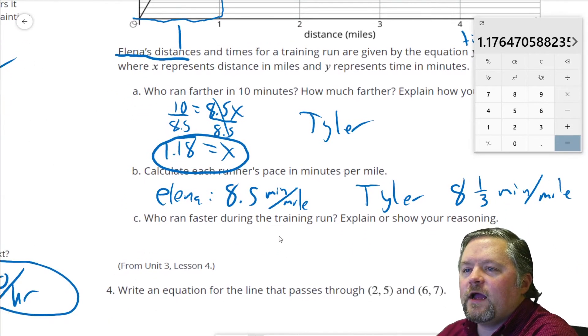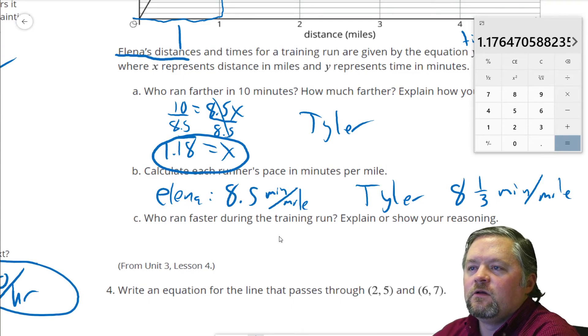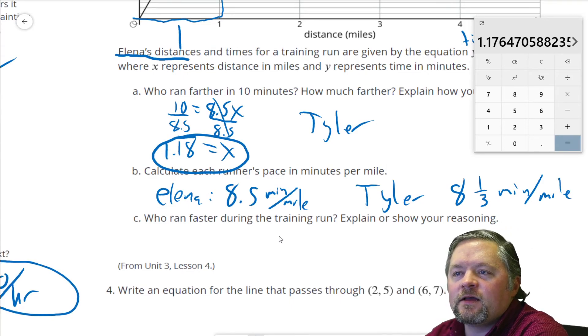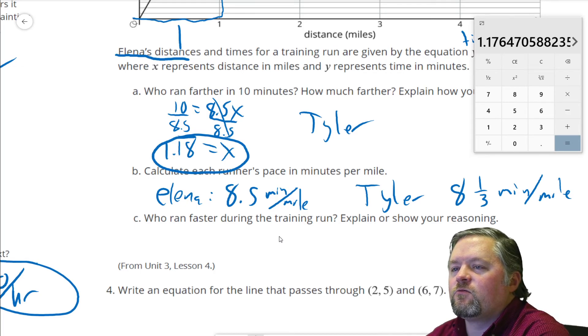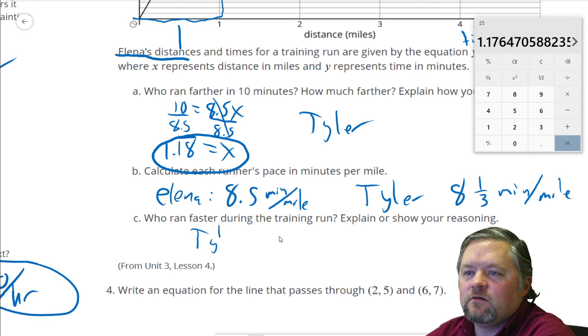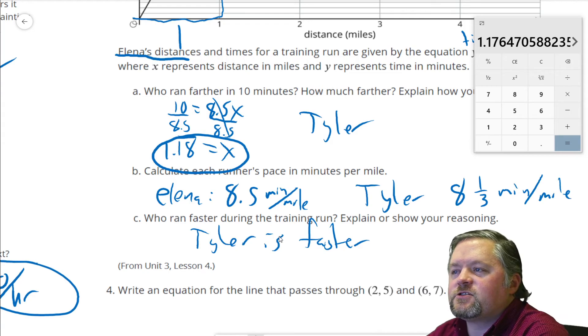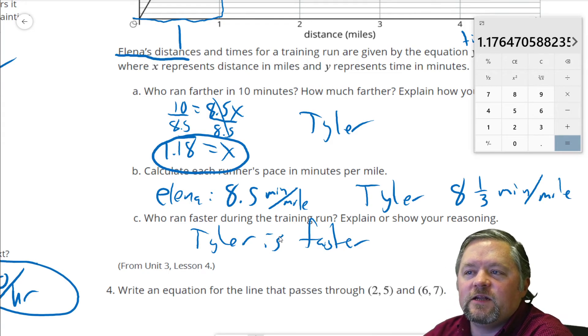Who ran faster? Well, what's faster, running a mile in 8 and a half minutes or running a mile in 8 and a third minutes? Tyler is faster because running a mile in 8 and a third minutes is slightly faster than running it in 8 and a half minutes.